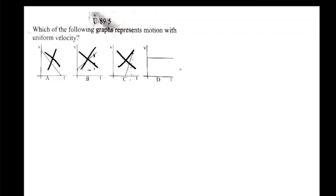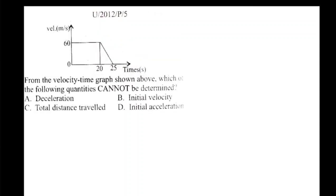A line that represents uniform motion or rest is a non-sloped line — a line with zero slope. So the correct answer is option D. Let's move to the next question. The question is from 2012, question number 5. From the velocity-time graph shown above, which of the following quantities cannot be determined?